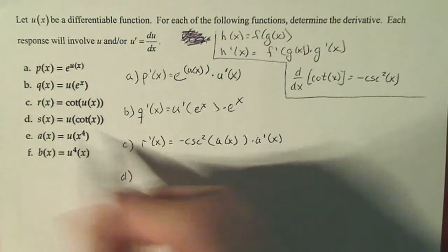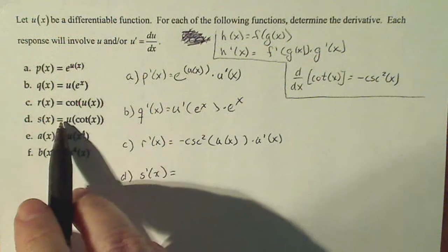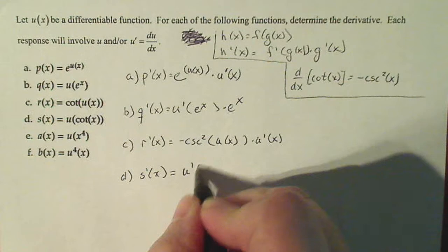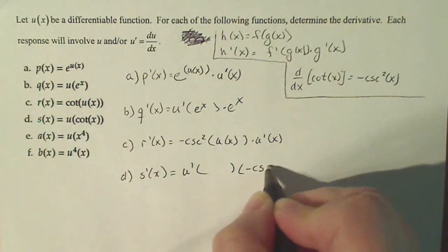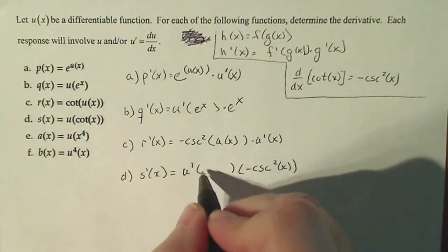Letter d, s prime of x. Now my outside is u, my inside is cotangent. Derivative of the outside, derivative of cotangent, and the original inside over here.